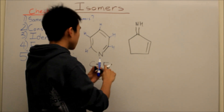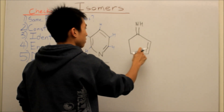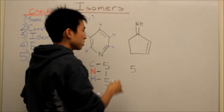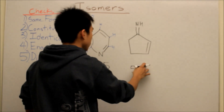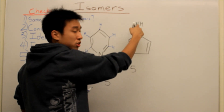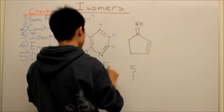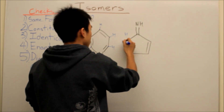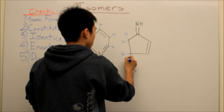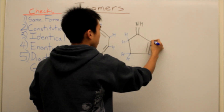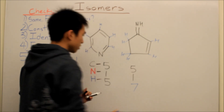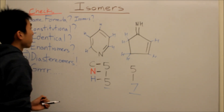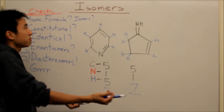Over here, let's do the same thing. Carbon check: one, two, three, four, five — so it looks like they are most likely isomers based on that. Nitrogen check: there is one nitrogen here. Now the hydrogen check: one, two, three, four, five, six, seven. Because of this difference in hydrogen count, they're not even isomers in the first place, and you're done. They're just not the same.